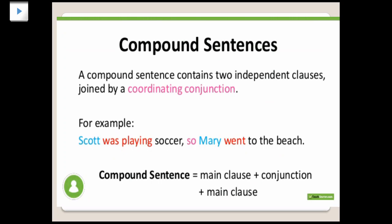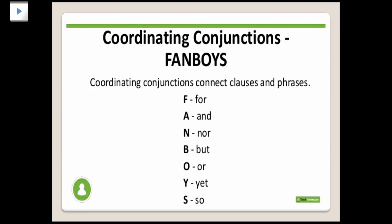The compound sentence contains two independent clauses joined by a coordinating conjunction. For example, 'Scott was playing soccer, so Mary went to the beach.' 'Scott was playing soccer' gives a complete meaning, and 'Mary went to the beach' also gives a complete meaning. So both are independent clauses, and they are joined by a coordinating conjunction. In a compound sentence, you will find two independent clauses.